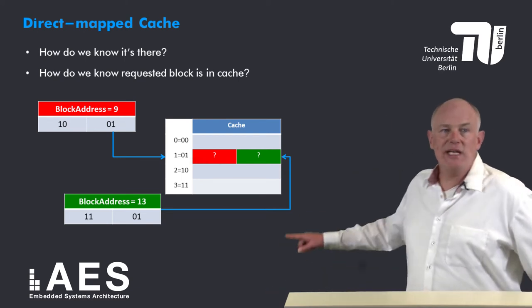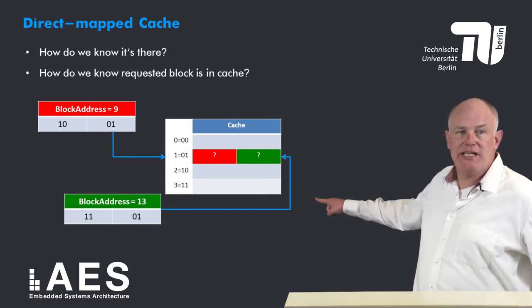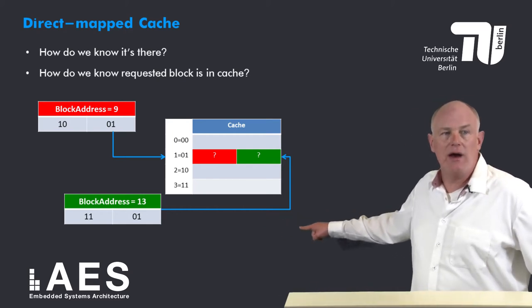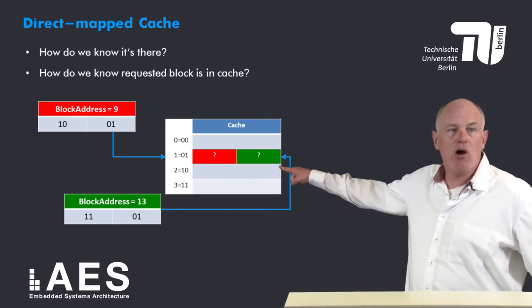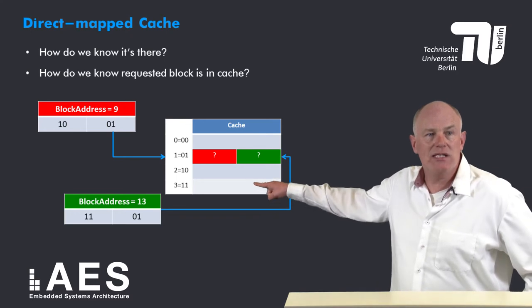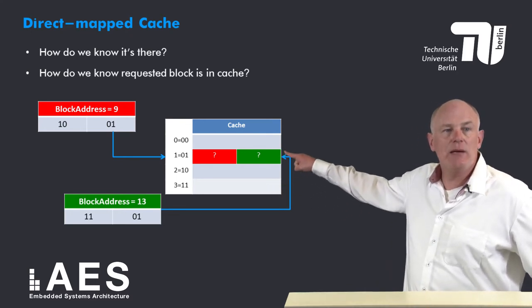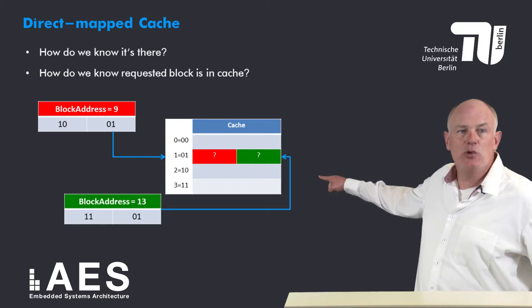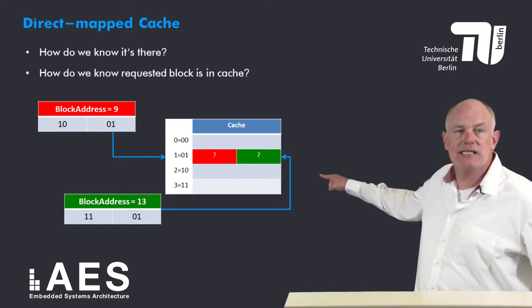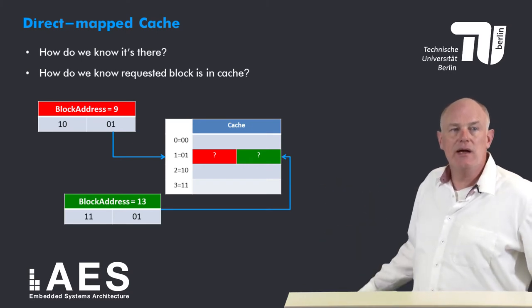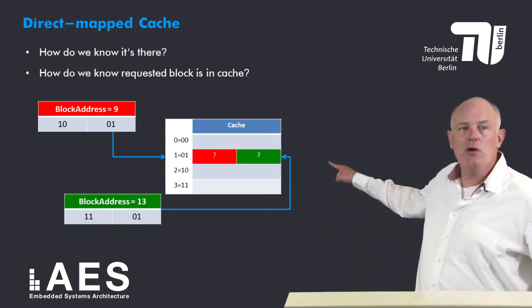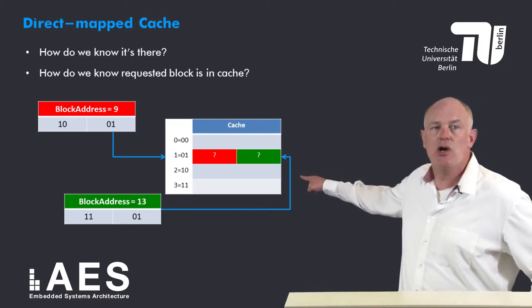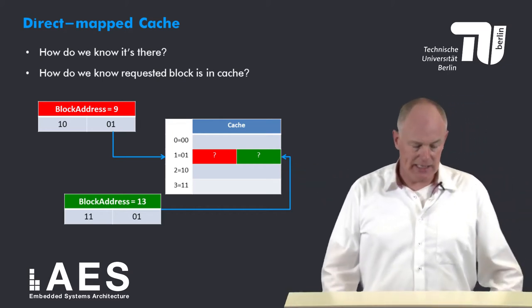For example, block address 13 (binary 1101) and block address 9 (binary 1001) — the red block and the green block — both map to cache index 01, decimal 1. So how do we know if the green block or the red block is present in cache?